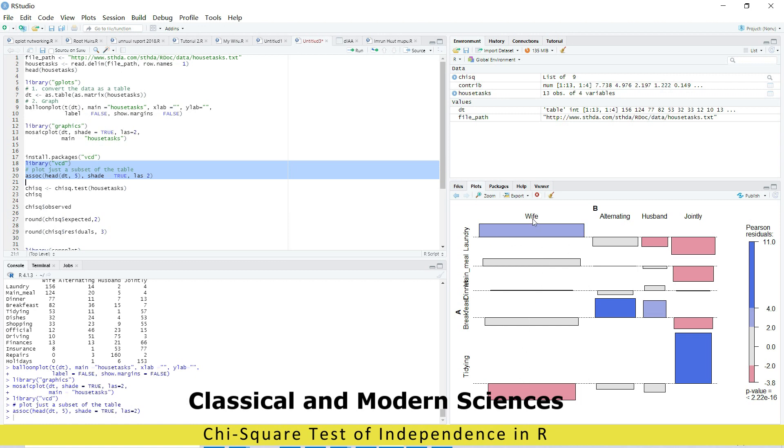Below the line is negative and above the line is positive. So wife is positive in laundry and male, and she is negative in tidying, while jointly is positive.